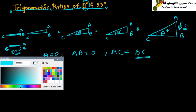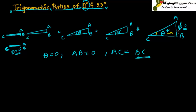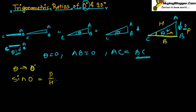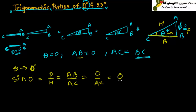Now let's find out the trigonometric values. This is theta, so just opposite of theta will be the perpendicular, the side on which theta is seated is the base, and the largest side is always the hypotenuse. Let's find sine zero degree. Sine zero equals P upon H. P is AB, which is zero, and H is AC. So zero upon something is always zero — sine zero degree equals zero.